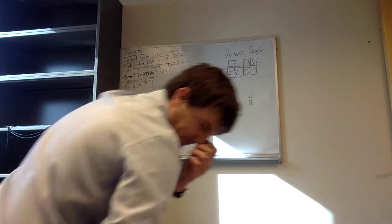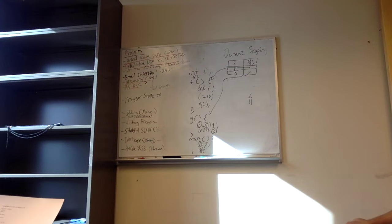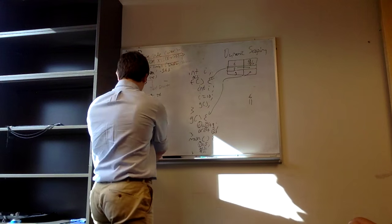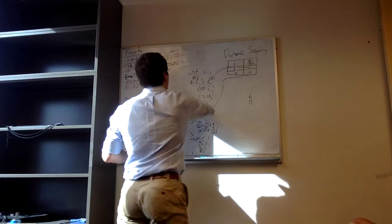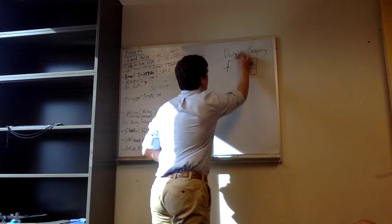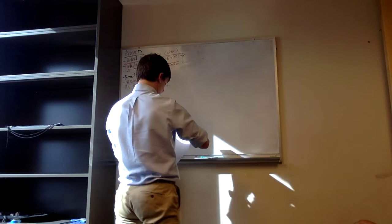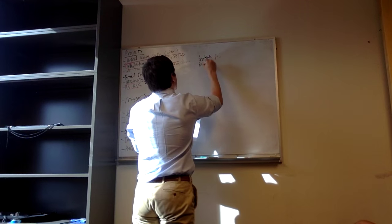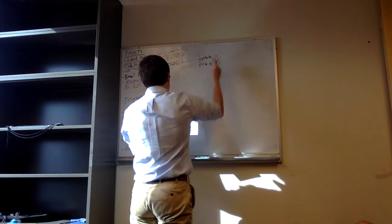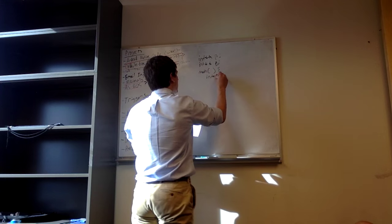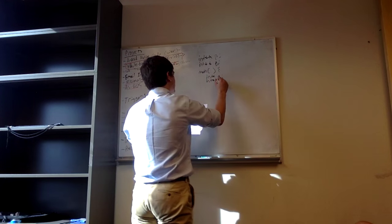Now problem five, number two — this is about code with pointers. I'll draw a simplified version on the board. We have int star star q, int star p, int star A, int star B. We say A is equal to malloc of size of integer, and B is equal to malloc of size of integer. I'm changing it slightly but this isn't going to affect anything.